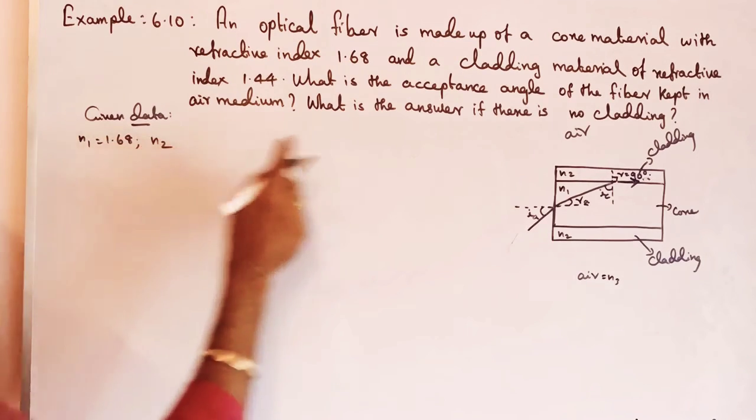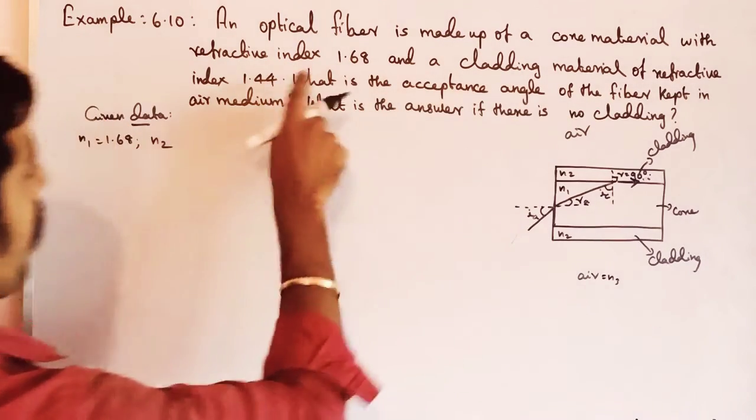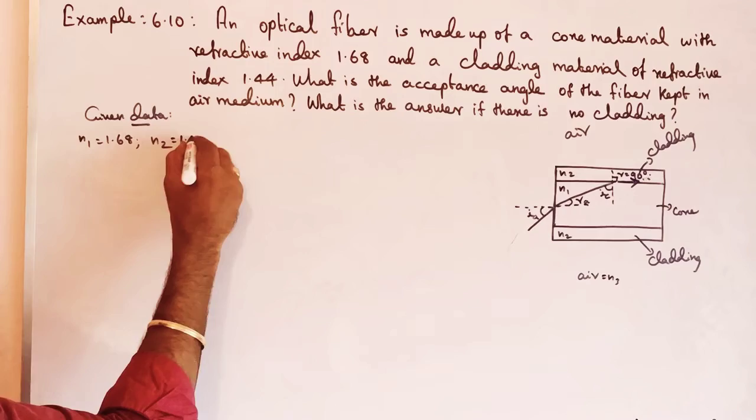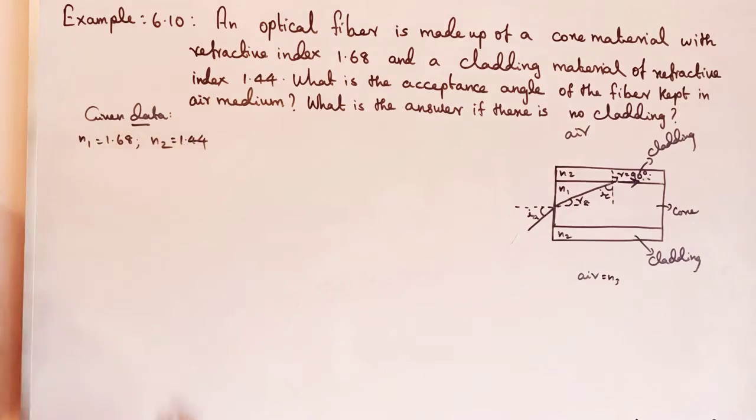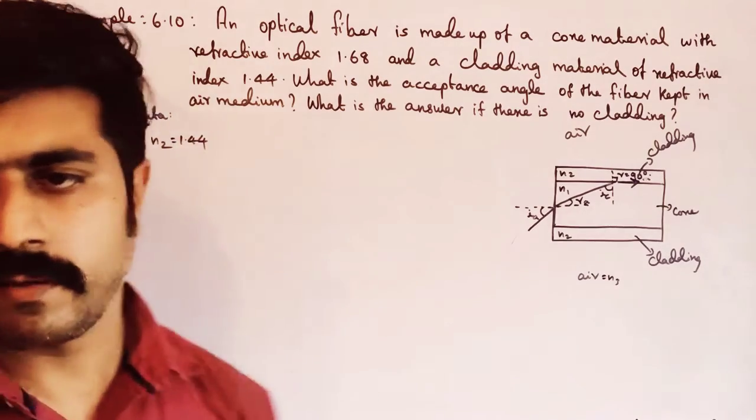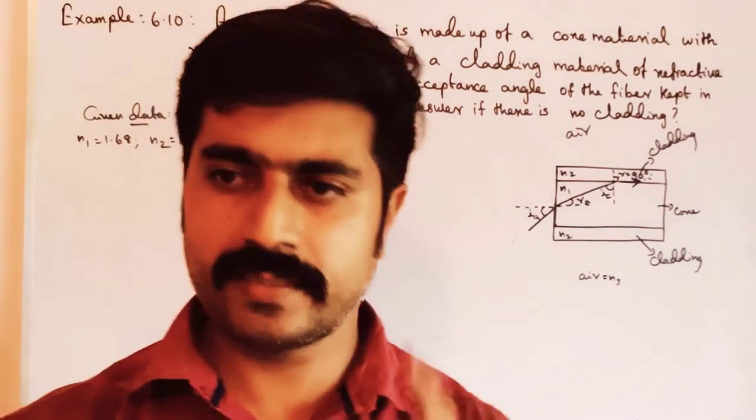The cladding refractive index n2 is equal to 1.44.